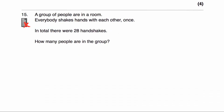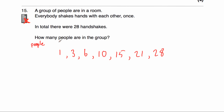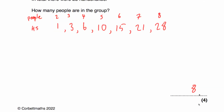Question fifteen: a group of people are in a room and everyone shakes hands once — we know this will give a triangular number. Two people → 1 handshake, three people → 3 handshakes, four people → 6, five people → 10, six people → 15, seven people → 21, eight people → 28. Since there were 28 handshakes, there are eight people in the room.